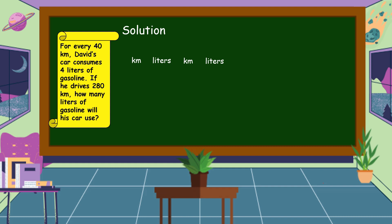So for every 40 kilometers, David's car consumes 4 liters of gasoline. If he drives 280 kilometers, how many liters of gasoline will his car use? So we put here N as our variable to represent the answer.